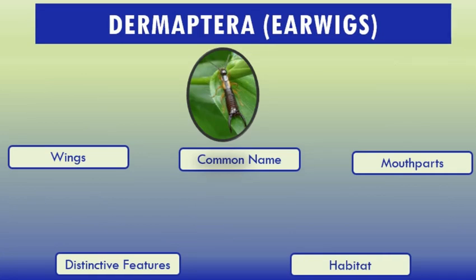The last order is Dermaptera — earwigs. It does not have to do with the ear, as people usually think, suggesting they insert into the ear; that is not the case. Earwigs make up the insect order Dermaptera, with about 2,000 species in 12 families, making them one of the smaller insect orders. Earwigs are characterized by cerci — a pair of forceps-like pincers on their abdomen — and membranous wings folded underneath short leathery forewings that are rarely used. Hence the scientific order name means 'skinned wings.' Some groups are tiny parasites on mammals and lack the typical pincers. Earwigs are found on all continents except Antarctica.